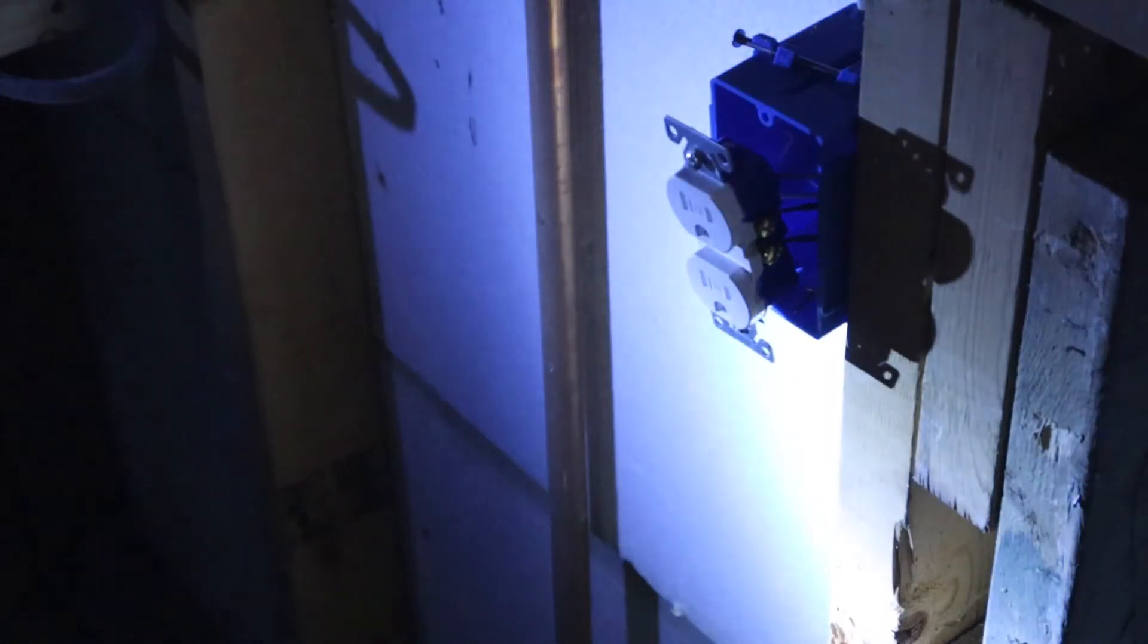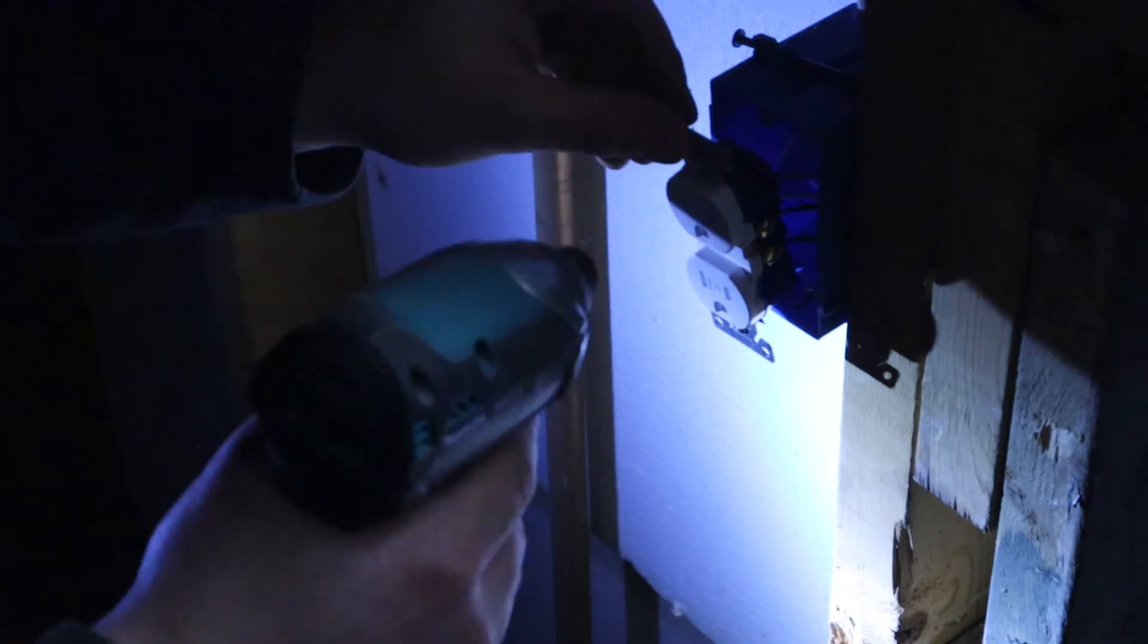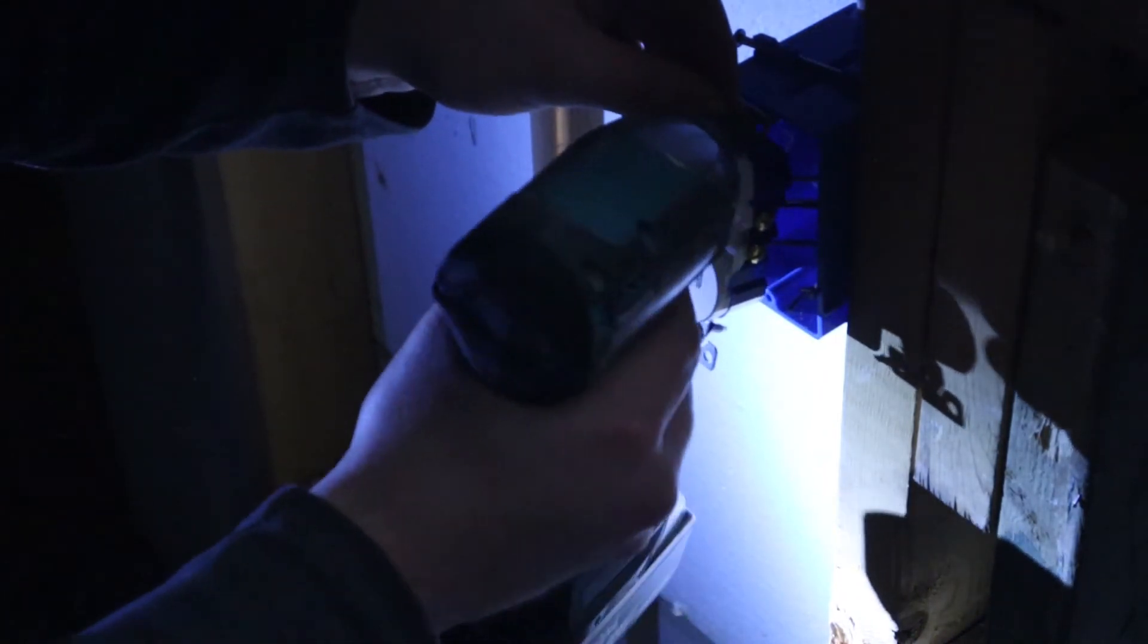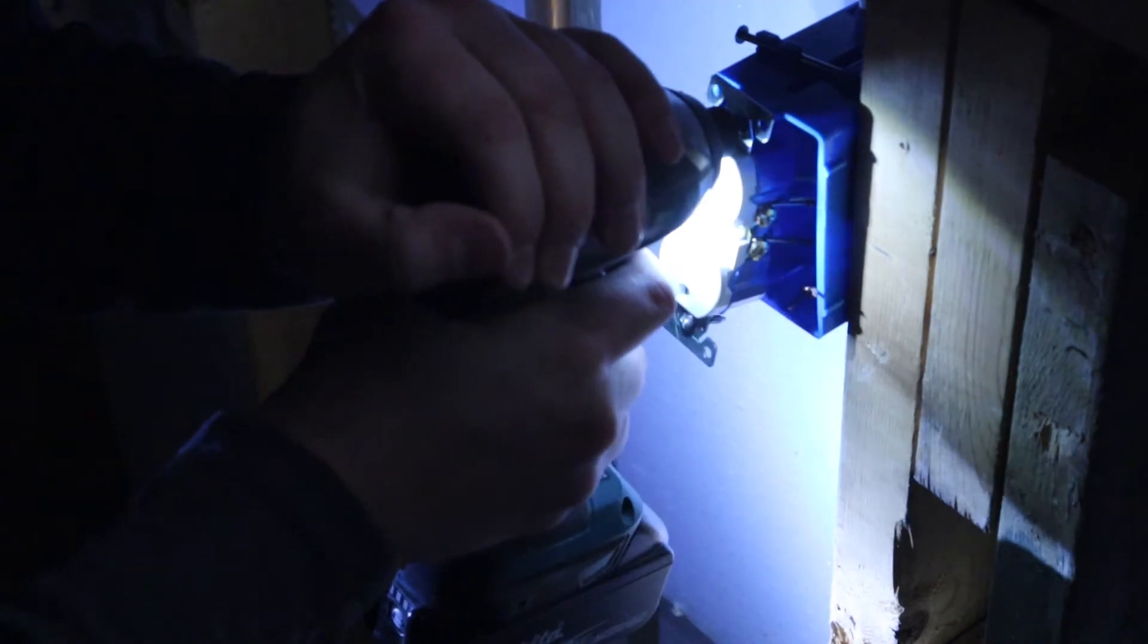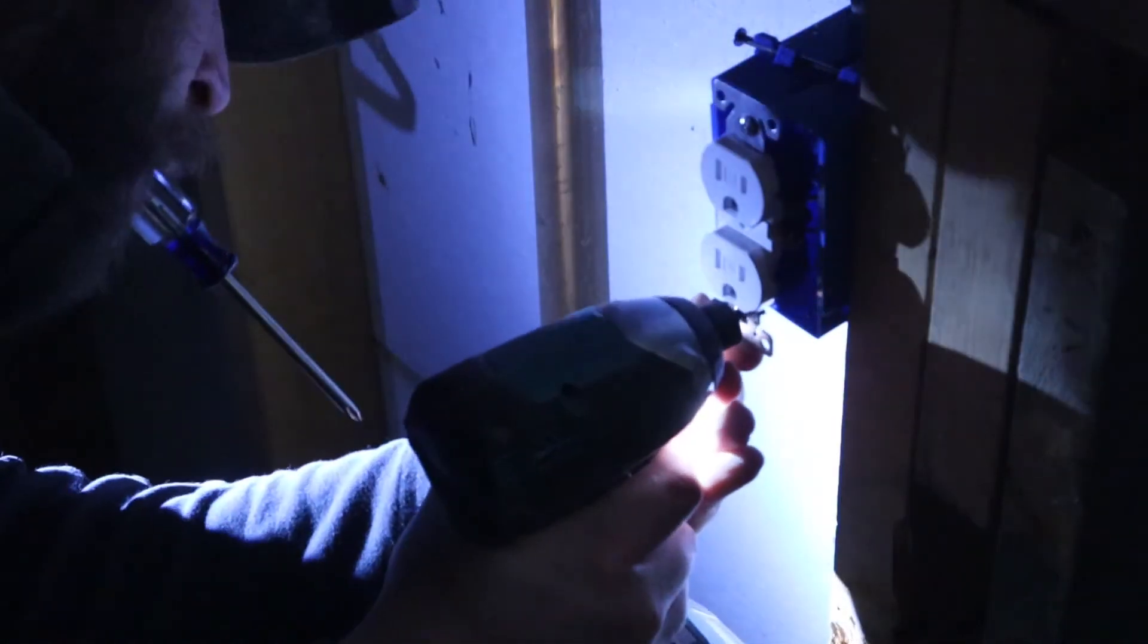And this is where it comes in handy to trim off the excess sheathing at the very beginning because now as I screw it in those individual wires will fold just fine and find a place in the back of the box.